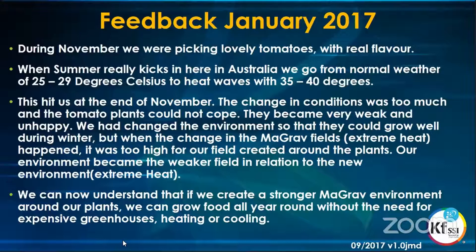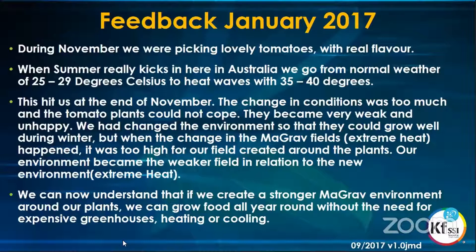We had noticed the tomatoes were perfect and beautiful — not one bit of attack by any insects. Then as soon as we had this huge heat change, almost within days the whole crop of tomatoes had been attacked by the fruit fly. We're still trying to understand this, but we think that by creating the conditions and using the plasma around our tomato plants, it had managed to grow throughout the winter. But as soon as we had an extreme heat condition — an increase in the Magrav fields — these were just far too high for what we had created around our tomato plant, and there was almost a breakdown of that interaction.